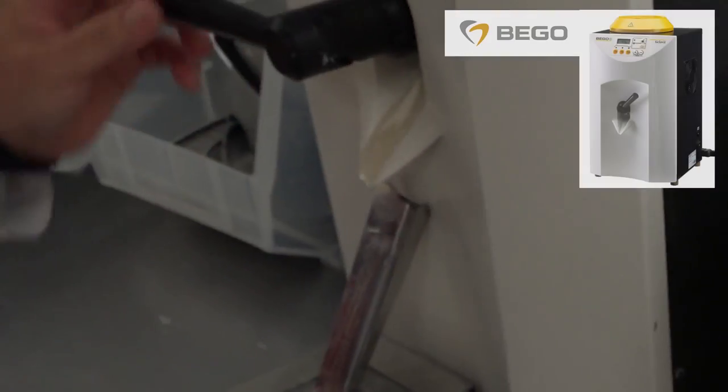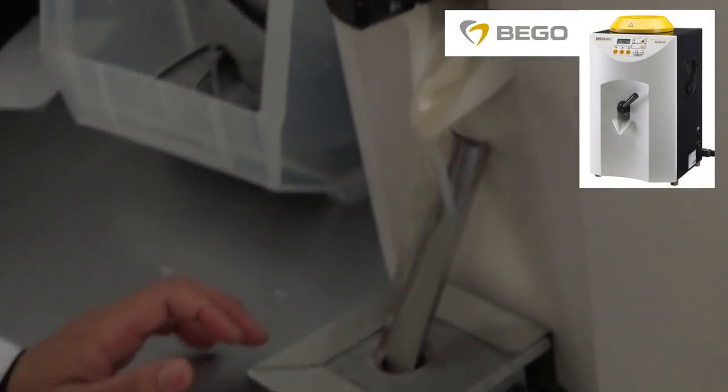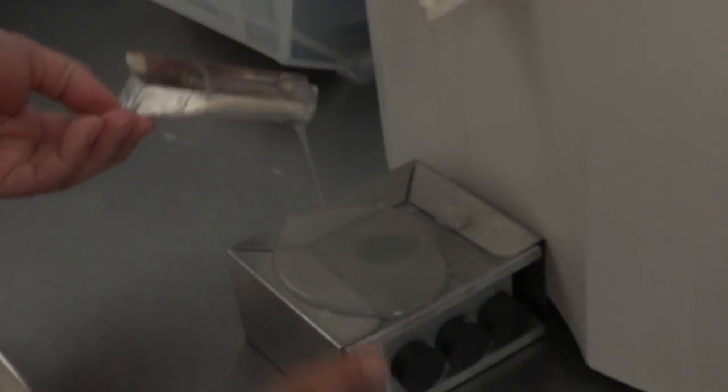Fill mold with duplicating material. Allow to sit for five minutes, then place in water for five minutes.